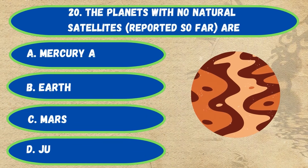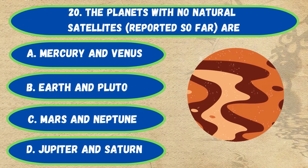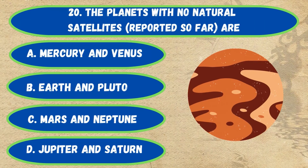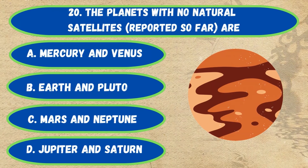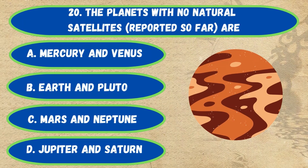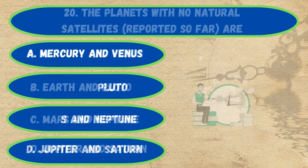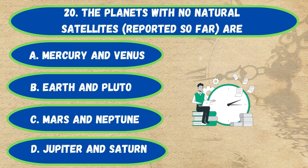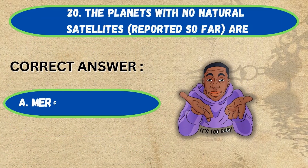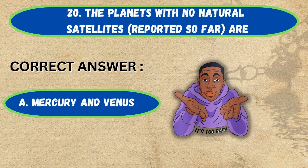Question number 20. The planets with no natural satellites are: option A, Mercury and Venus; B, Earth and Pluto; C, Mars and Neptune; D, Jupiter and Saturn. The correct answer is option A, Mercury and Venus.